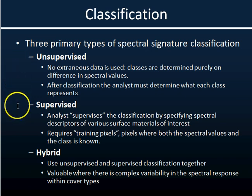Supervised classification means that you know on the ground where specific features are that interest you, and you actually train the software to look specifically for those reflectance signatures. In other words, you're training the software to look for a very particular reflectance feature — you're providing initial information to train the algorithms, which are then used to classify the rest of the image.